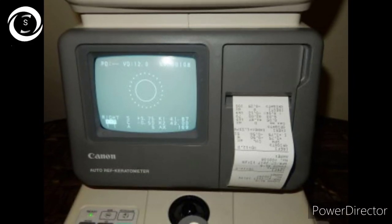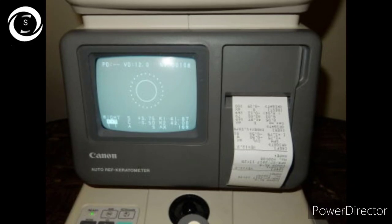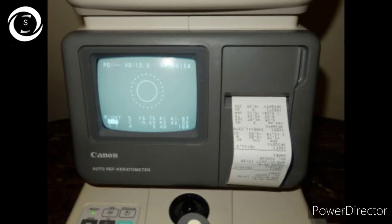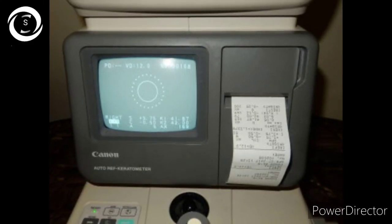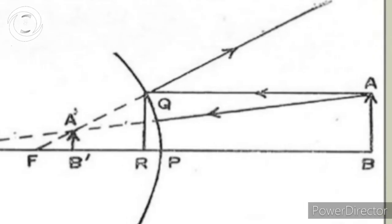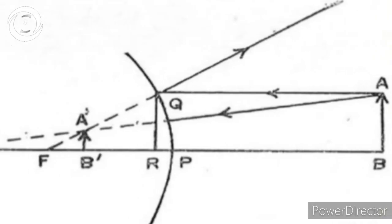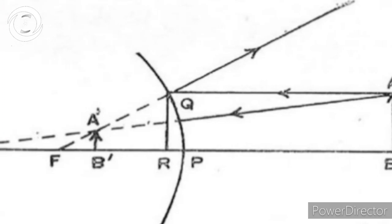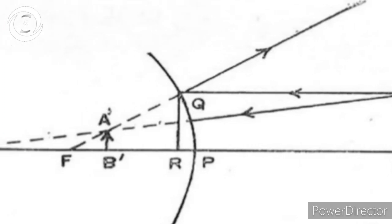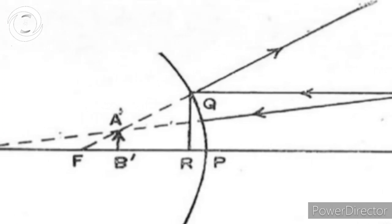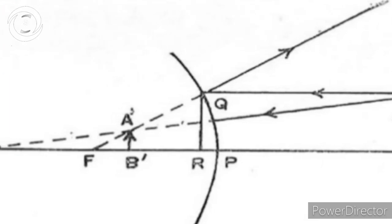Keratometry is based on the principle that the anterior surface of the cornea acts as a convex mirror, and the size of the image formed varies with its curvature. The greater the curvature of the cornea, the lesser the image size. From the size of the image, the radius of curvature of the cornea is calculated.